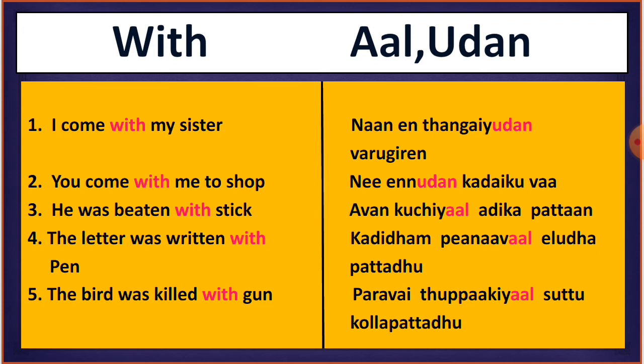Here is an example: 'The letter was written with pen.' In Tamil: 'Kadidam penawal eludapattadu.' 'Kadidam' means letter, 'penawal' means with the pen, 'eludapattadu' means was written. Here we are using the object pen, and with the help of that pen we are writing the letter, so we use 'penawal' with 'aal'.